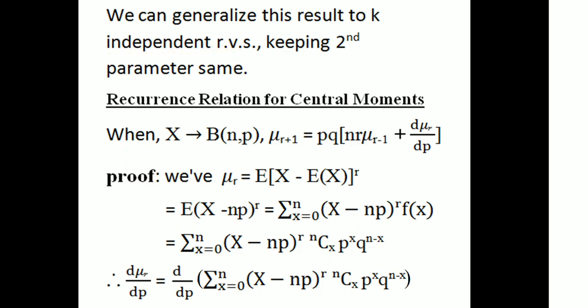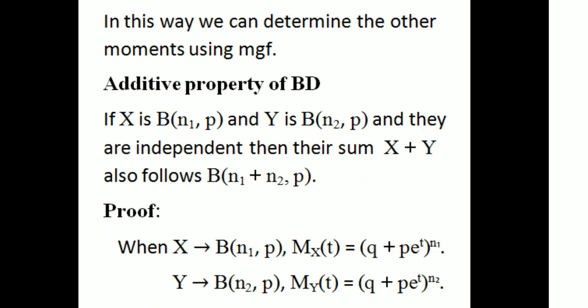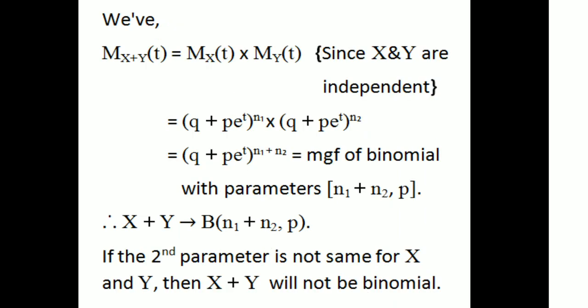We can generalize this result to k independent random variables, keeping the second parameter p the same. That is, if X follows B(n₁, p) and Y follows B(n₂, p) and they are independent, then X plus Y follows B(n₁ plus n₂, p). This additive property holds for any number of independent binomial variables sharing the same parameter p.